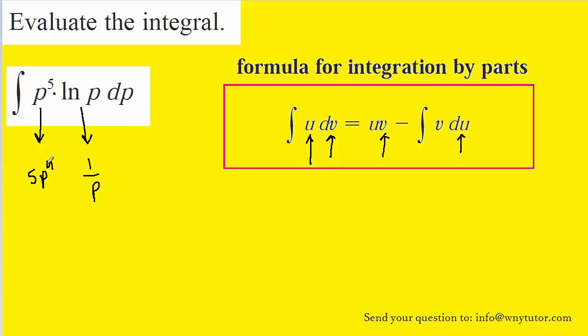So in this case, letting u equal the natural log of p will be the best bet because that will follow the rule that the derivative of natural log p becomes a simpler function.